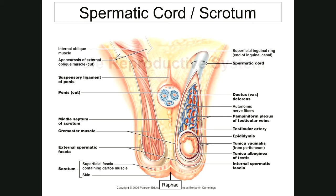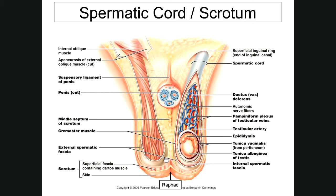Looking at the male, the first structure is the scrotum — a cutaneous pouch which contains the testicles, the primary sex organ of the male. There is a raphe, a median ridge in the middle externally. The septum is a loose connective tissue wall which divides the scrotum into two compartments, each containing one testicle. The dartos muscle is also part of this septum.